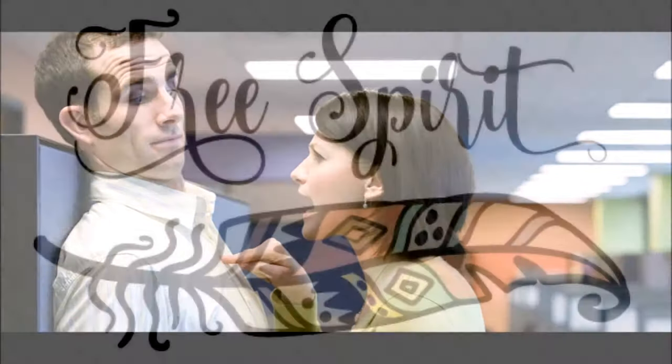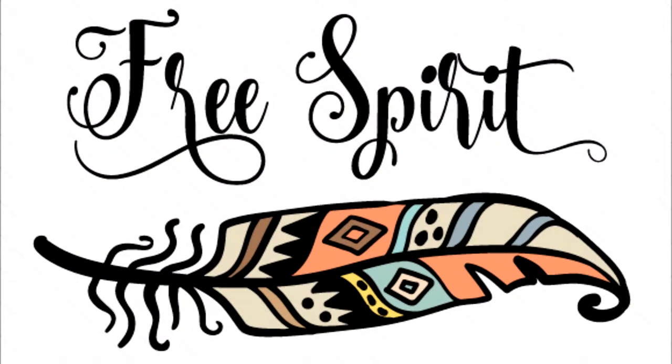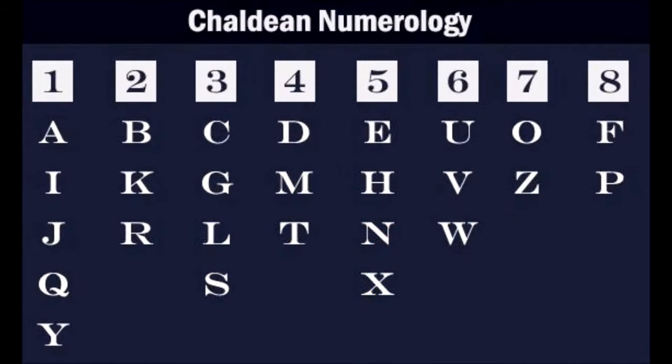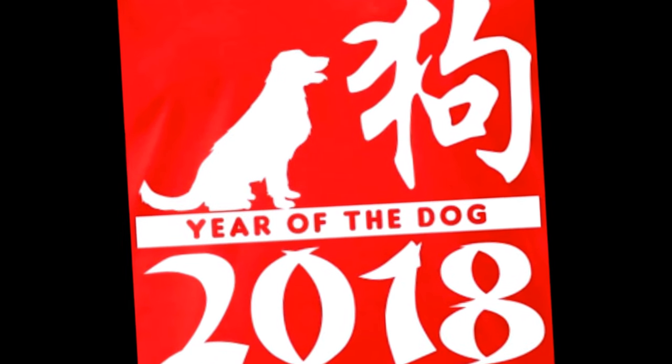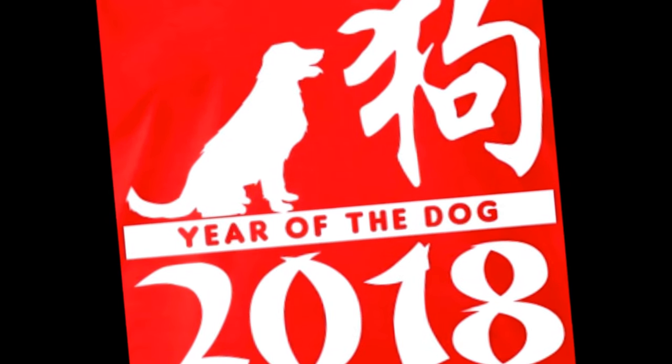The standard numerology graph is an alphanumeric table. This graph gives a number for each letter. Using this graph, words like a name can be changed into a number value. These numbers are then used to make predictions. So what predictions are there for 2018?